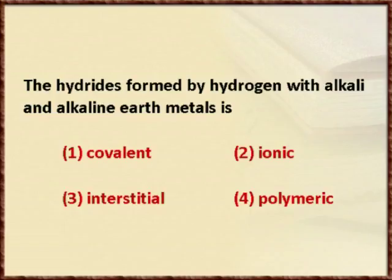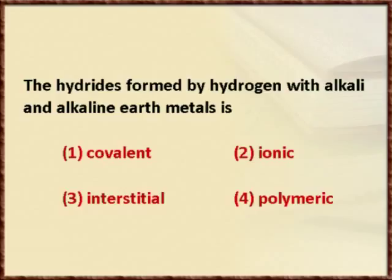What do we mean by hydrides? Hydrides are when hydrogen possesses a negative valency. Metals can form only basic types of hydrides, and we should see the nature of hydrides — whether it is going to be acidic or basic, and which type of bond it can form: covalent, ionic, or coordinate.